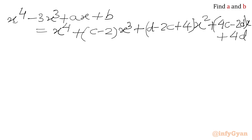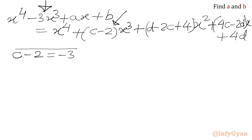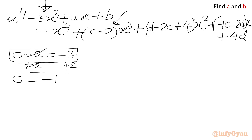Now we will compare all the coefficients from both sides. Comparing the coefficient of x³: c minus 2 equals minus 3. This is our first equation. Adding 2 to both sides, we get c equal to minus 1.